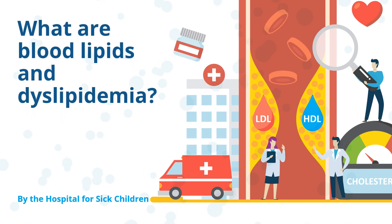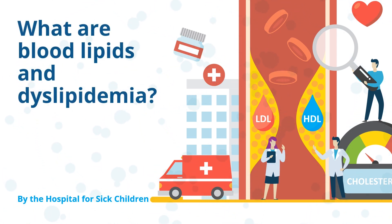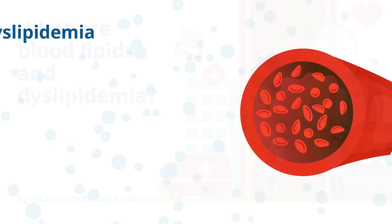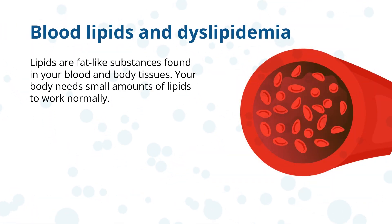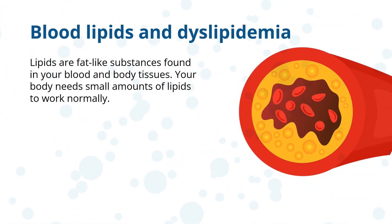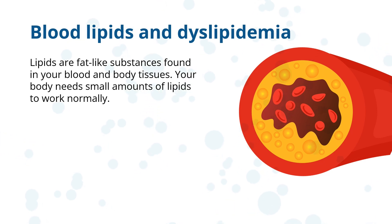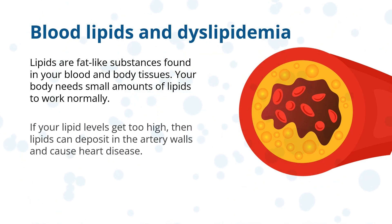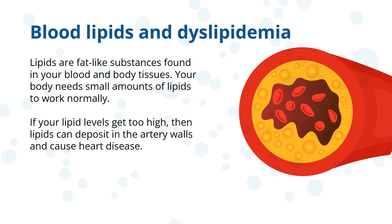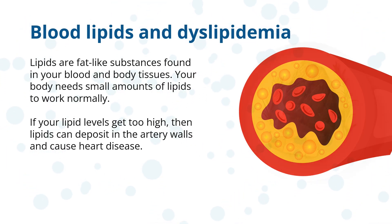What are blood lipids and dyslipidemia, by the Hospital for Sick Children? Lipids are fat-like substances found in your blood and body tissues. Your body needs small amounts of lipids to work normally. If your lipid levels get too high, then lipids can deposit in the artery walls and cause heart disease.